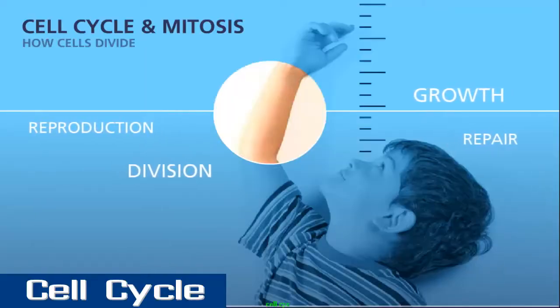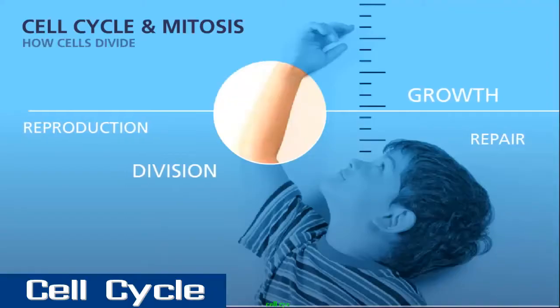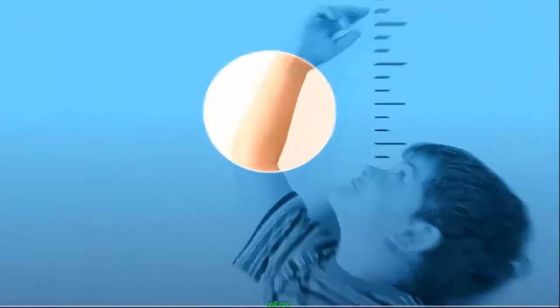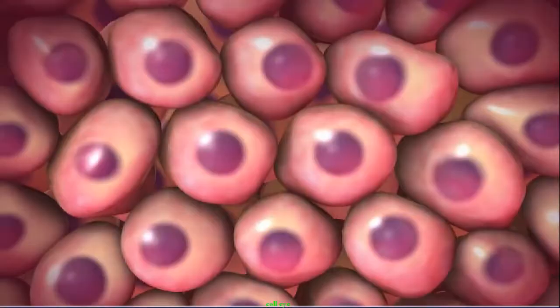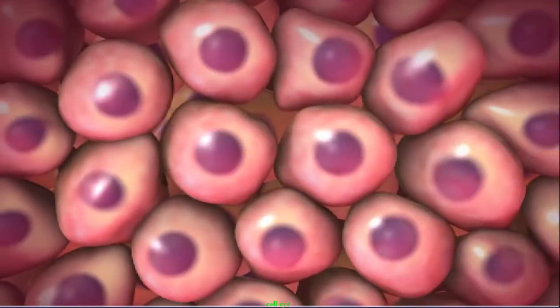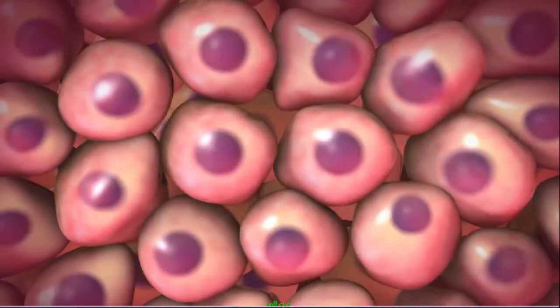In eukaryotic cells, this process is accomplished by a series of well-orchestrated steps called mitosis. Every day our bodies must produce millions of skin cells to replace those lost through normal activity. Each of these cells must have a complete complement of the genetic material.